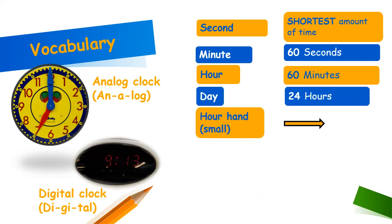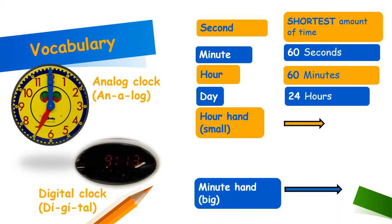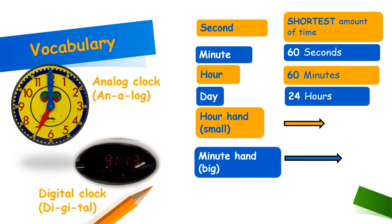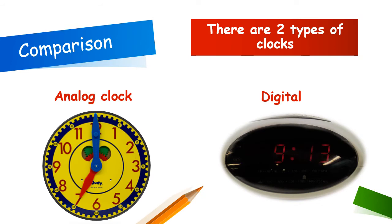Then we have the hour hand — this is the small or short hand on a clock — and the minute hand, which is the big or long hand on a clock. There are two types of clocks: an analog clock and a digital clock, and when telling time we refer to it in hours and minutes.